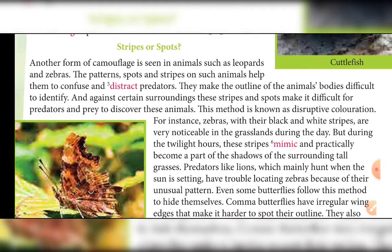For instance, zebras with black-and-white stripes are very noticeable in grasslands during the day. But during twilight hours, these stripes mimic — meaning copy — and partially become part of the shadow of surrounding tall grasses. During the night the stripes on the body of the zebra work a lot — they create the illusion of grass reflections since zebras are found in grasslands. This helps zebras to hide.